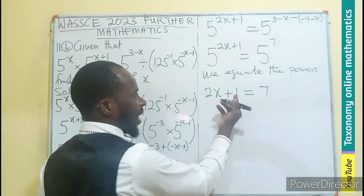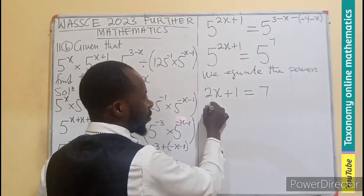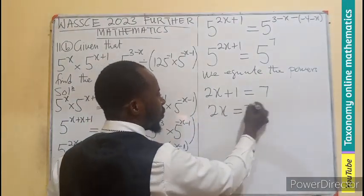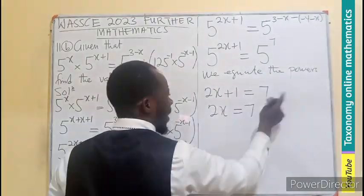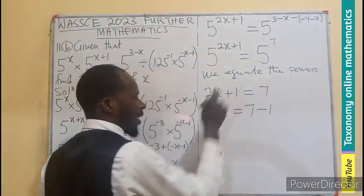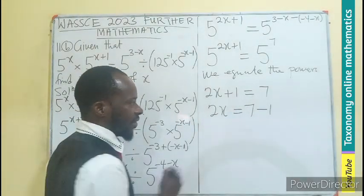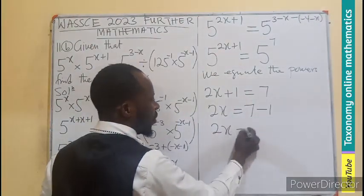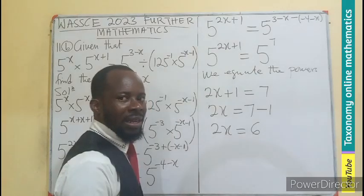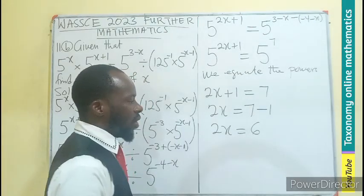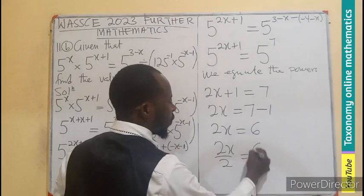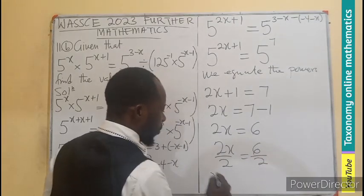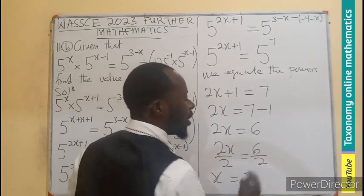Linear equation. Let's transpose this 1. So 2x equals to 7 minus 1. 7 minus 1 will give you 6. 2x will be equal to 6. Now we can divide through by the coefficient. So 2x over 2, 6 over 2. Meaning x will be equal to 3.